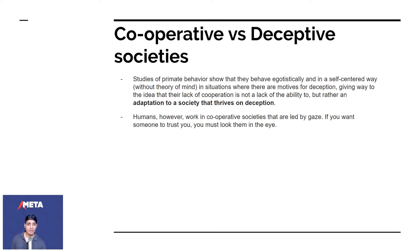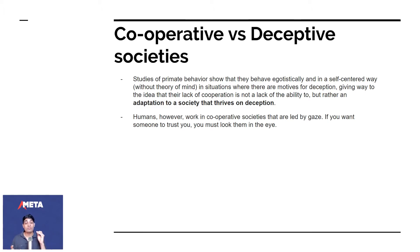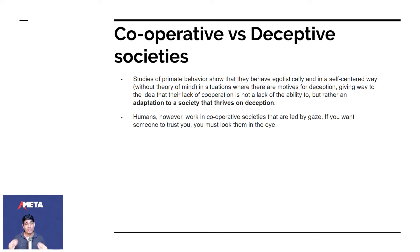Studies of primate behavior show that they behave egotistically and in a self-centered way without too much theory of mind in situations with motives for deception, giving way to the idea that their lack of cooperation is not a lack of ability but rather an adaptation to a society that thrives on deception.